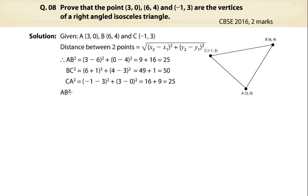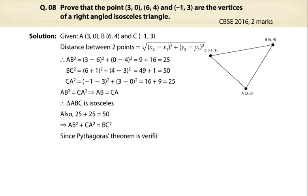AB² = CA², which implies AB = CA. Therefore, the triangle is isosceles. Also, 25 + 25 = 50, which implies AB² + CA² = BC². Since Pythagoras theorem is verified, the triangle is a right-angled triangle.